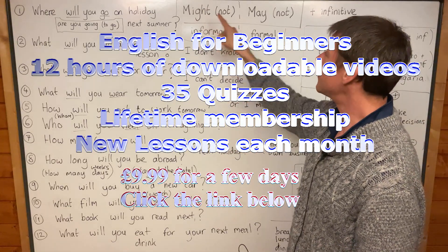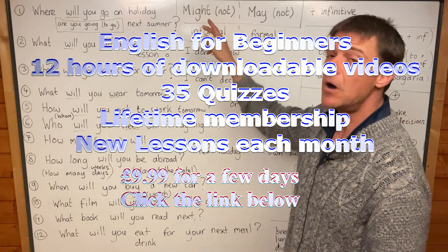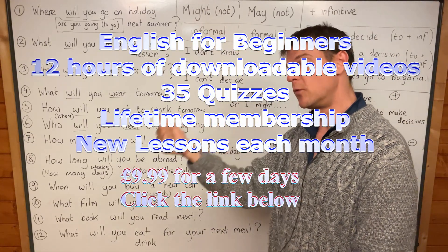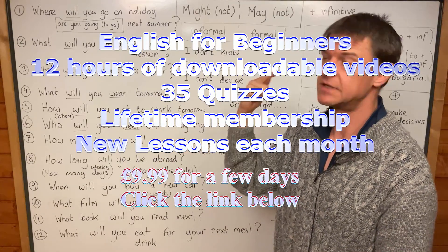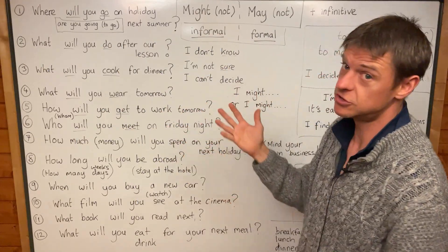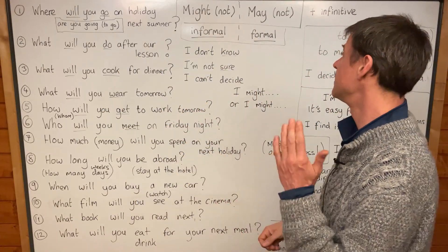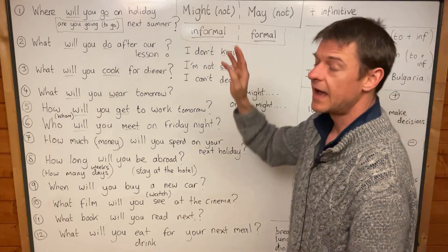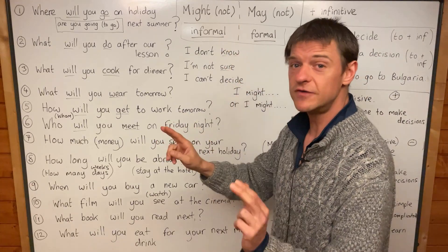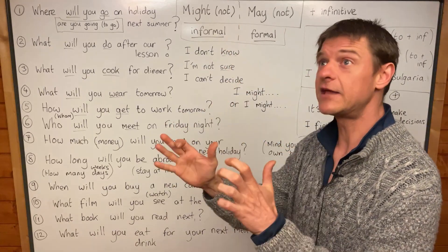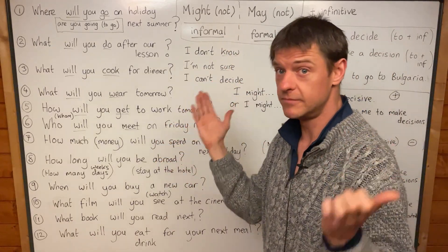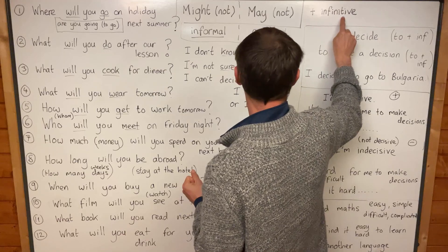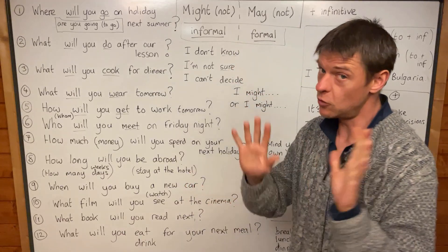These are modal verbs like will, won't, can, can't, should, shouldn't, must, mustn't. And like all modal verbs plus infinitive, always.